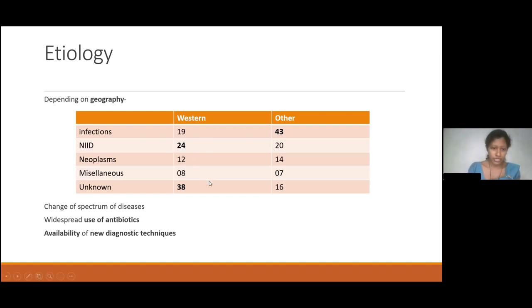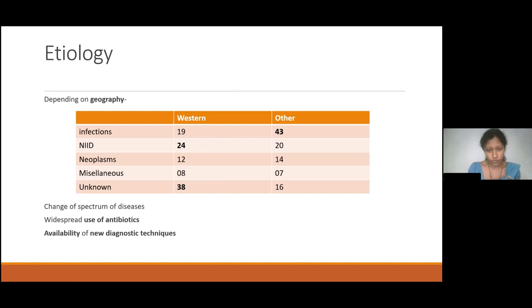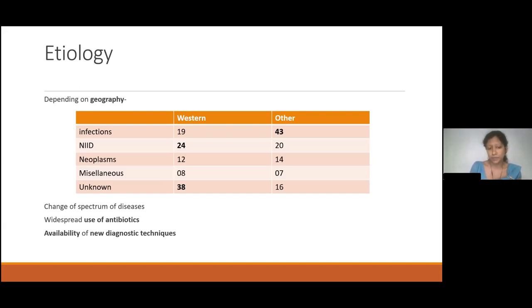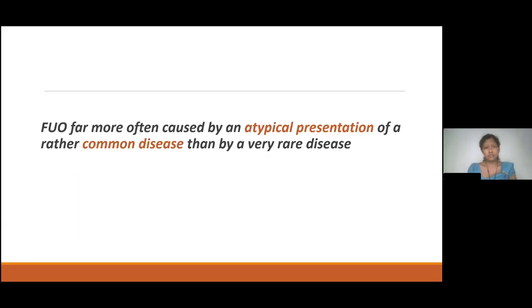Importantly, 38% of PUOs from Western countries remain truly unknown in cause — probably because people seek medical advice earlier there and have access to advanced investigations, meaning diagnosis is established within days to weeks. When cases reach the three-week threshold, they represent very difficult cases and an over-representation of the most challenging PUOs. There is also a change in the spectrum of diseases — previously in Sri Lanka malaria was an epidemic, but now what we consider more is conditions like melioidosis and HIV. Most of the time, PUO is caused by an atypical presentation of a rather common disease, rather than a very rare disease.